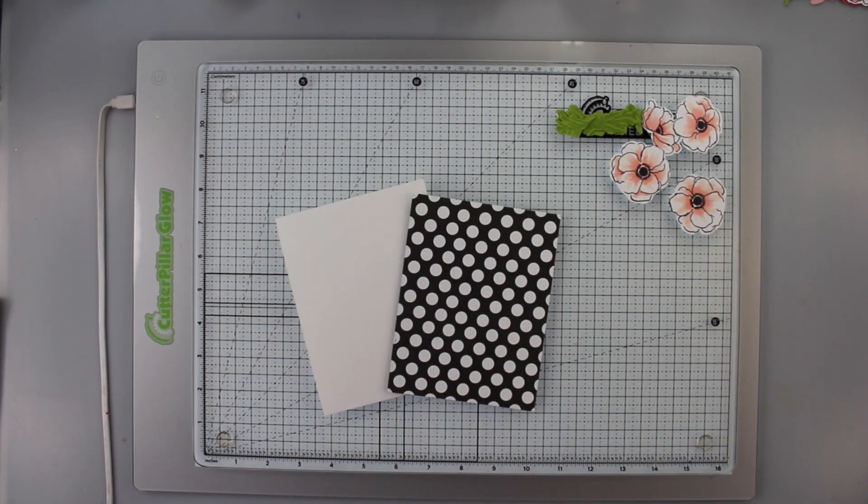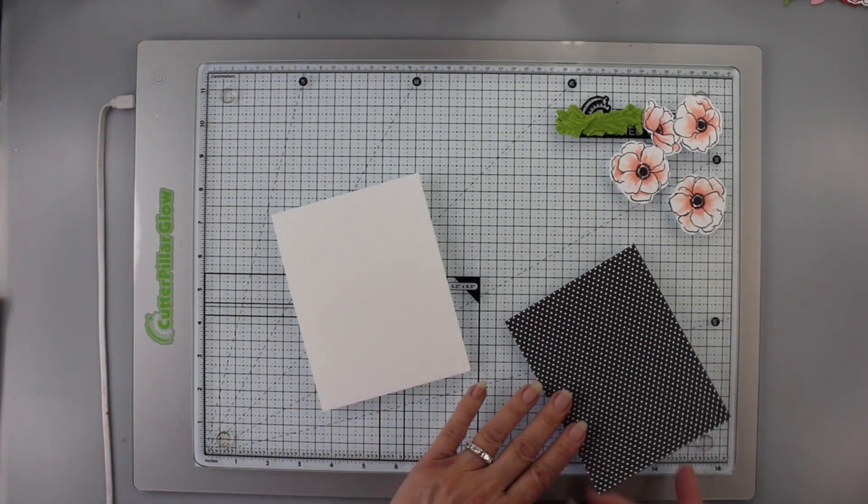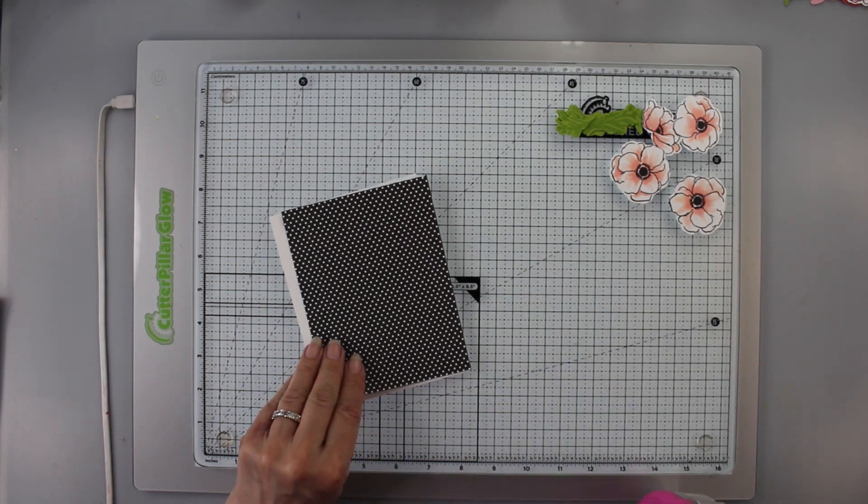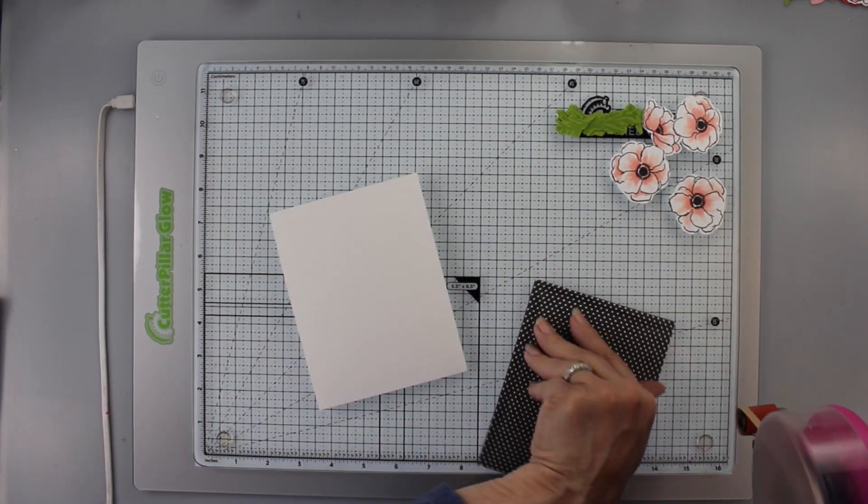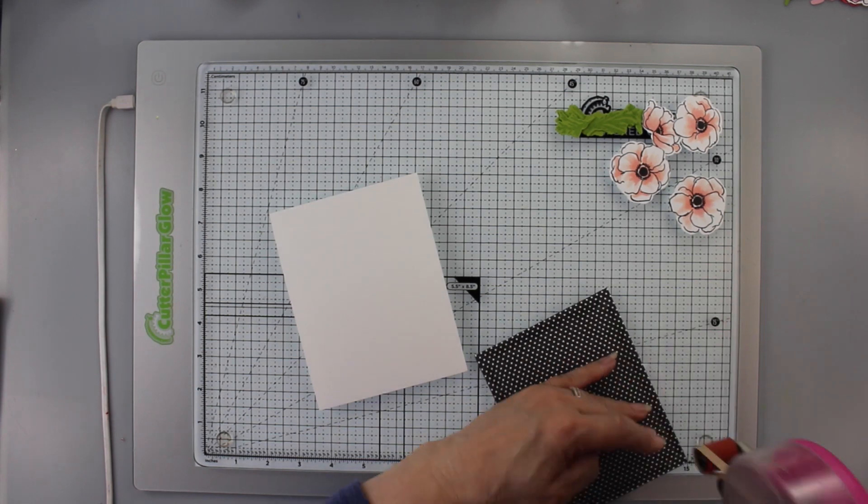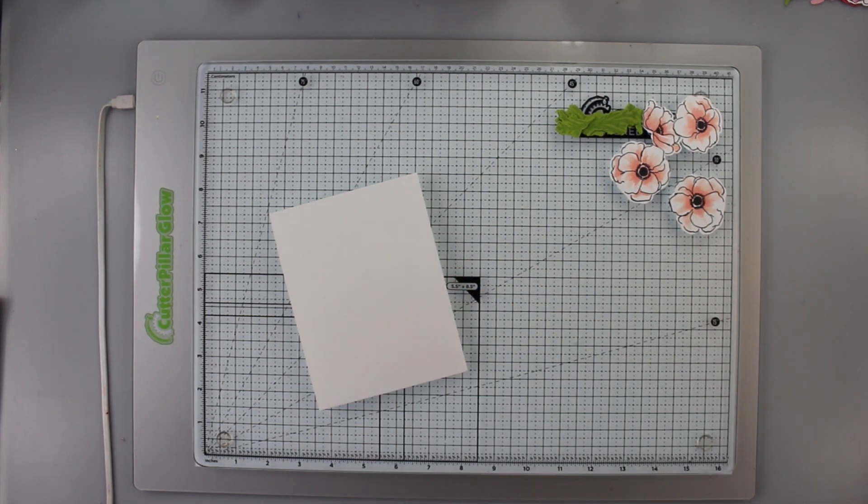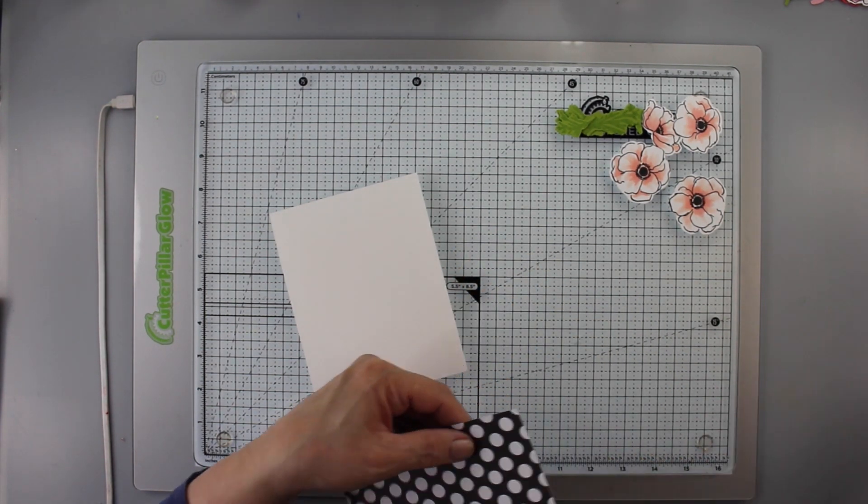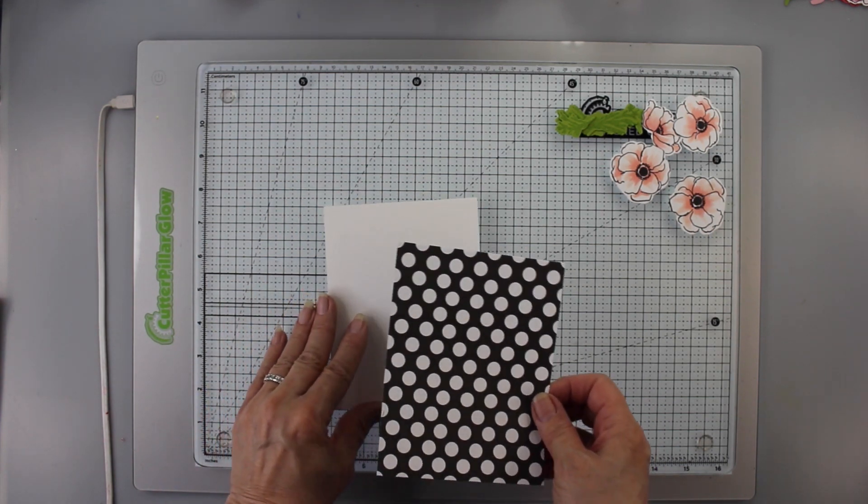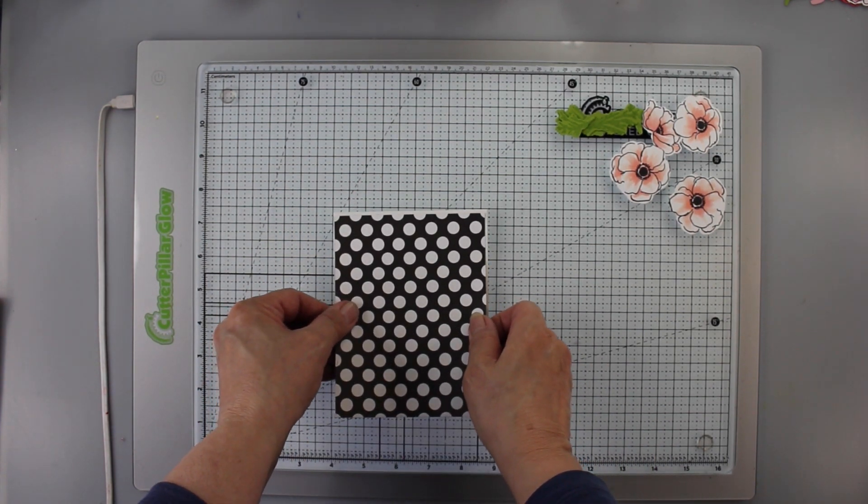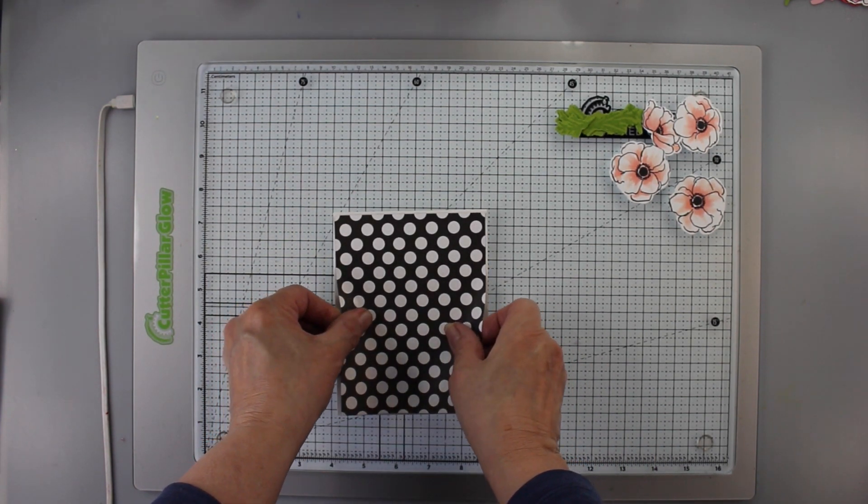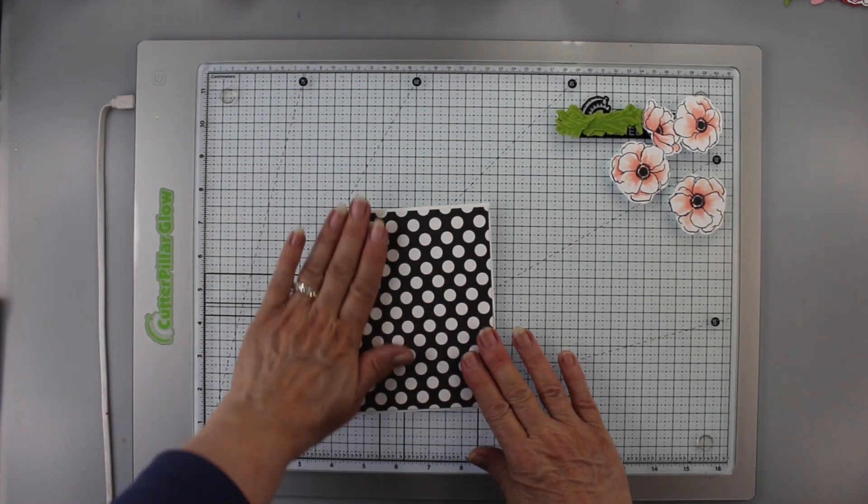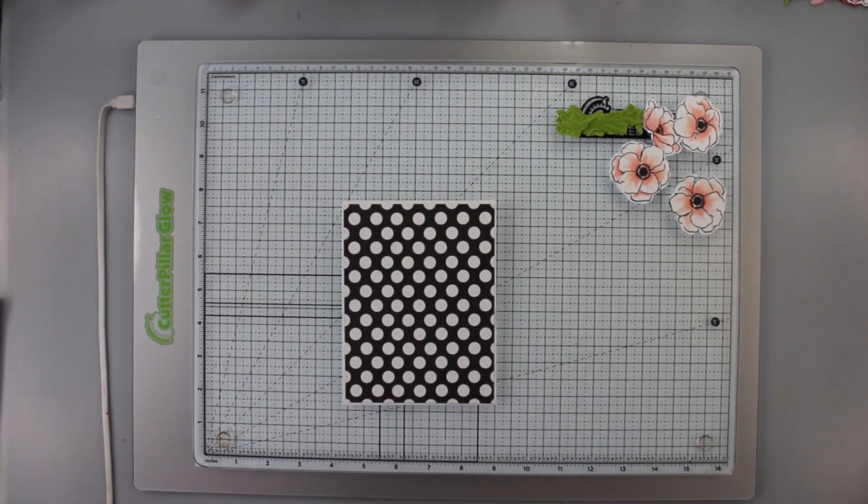So I have a white card base and then I have a piece of paper from the Biddy Big paper. It's True Black Biddy Big. They have all these wonderful papers that match their inks. And I chose the big polka dot as you saw on the reverse side is the small polka dot. But I'm going to use the big polka dot I think on the front of this. I'm going to go bold today.